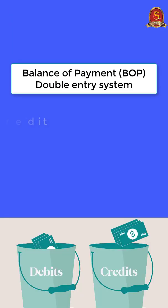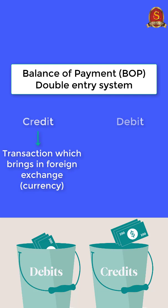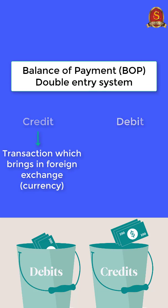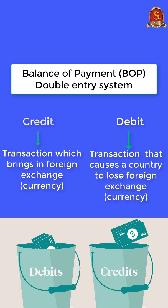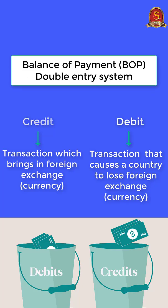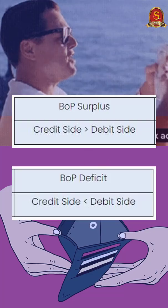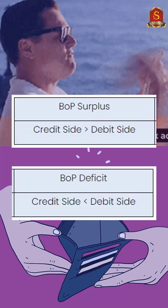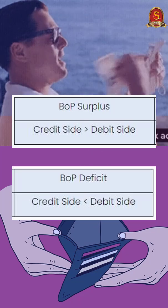The BOP account is based on a double-entry system, which contains two sides. Any transaction which brings in foreign currency is recorded on the credit side, whereas any transaction that causes a country to lose foreign currency is recorded on the debit side. So ultimately, if BOP is a surplus, it means the credit side is greater than the debit side.